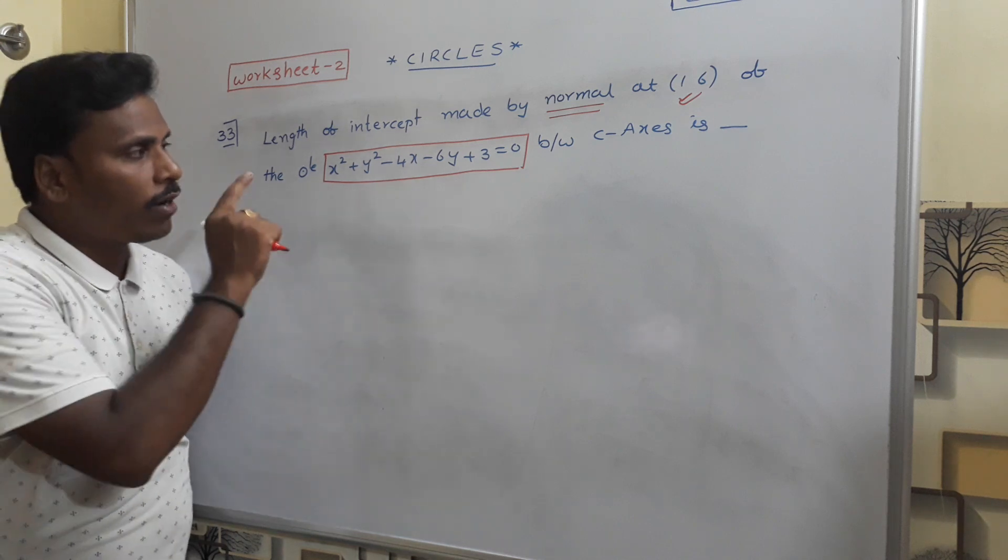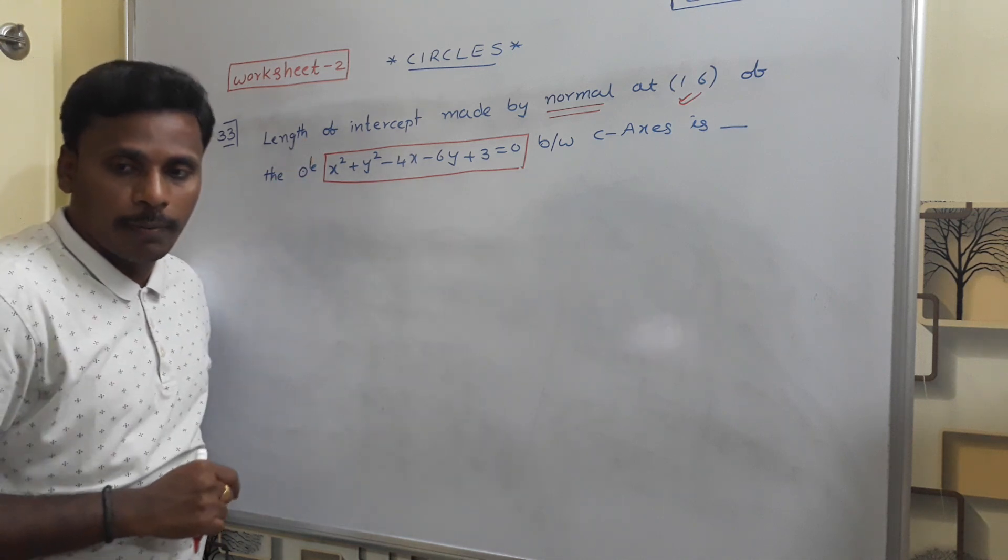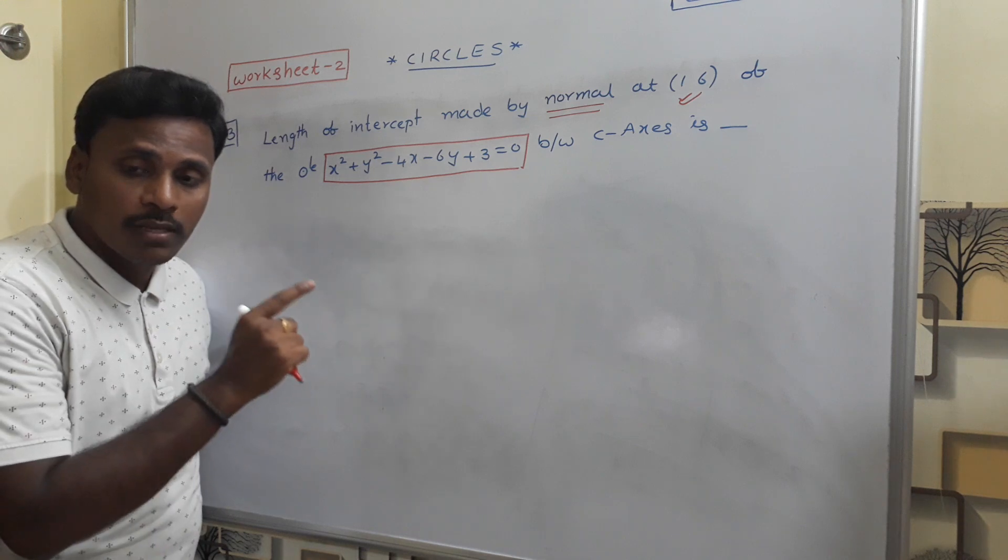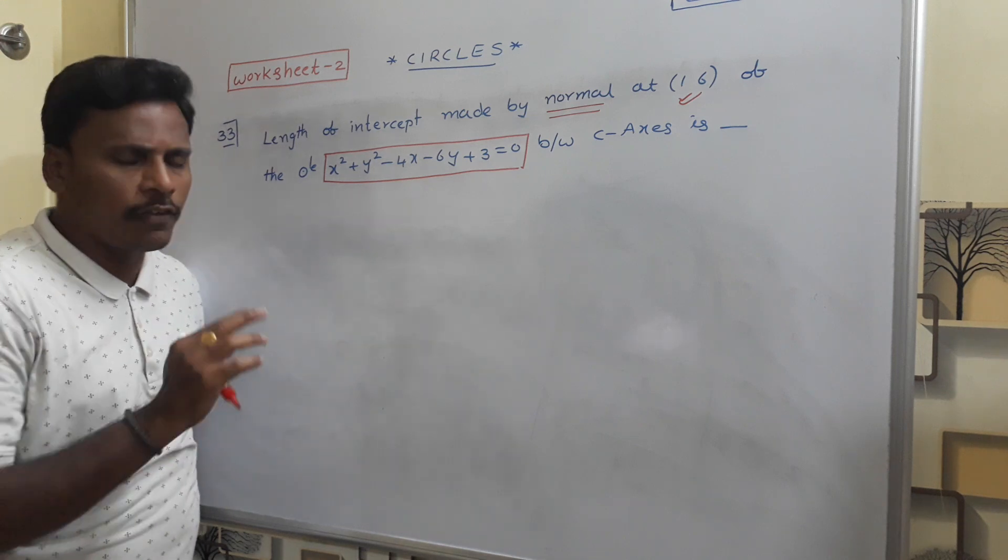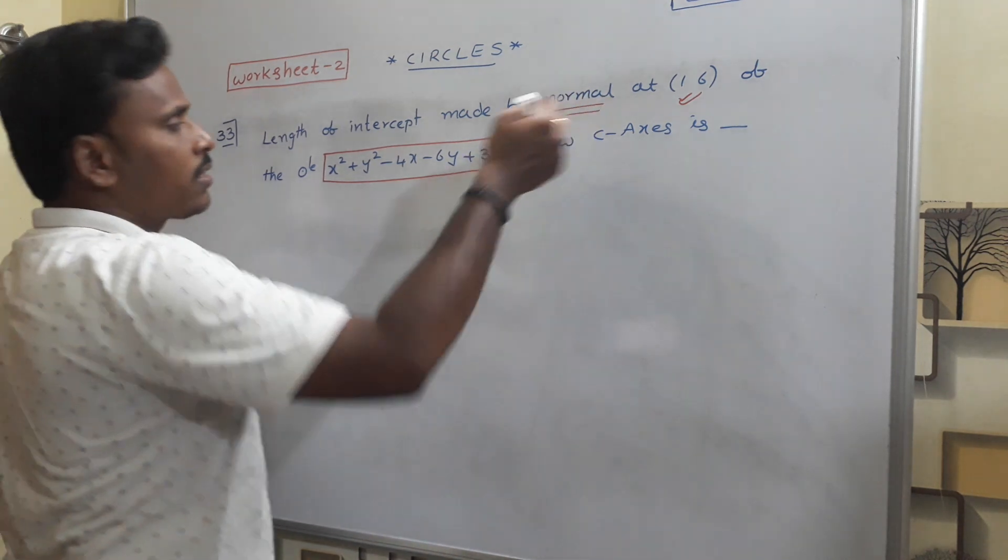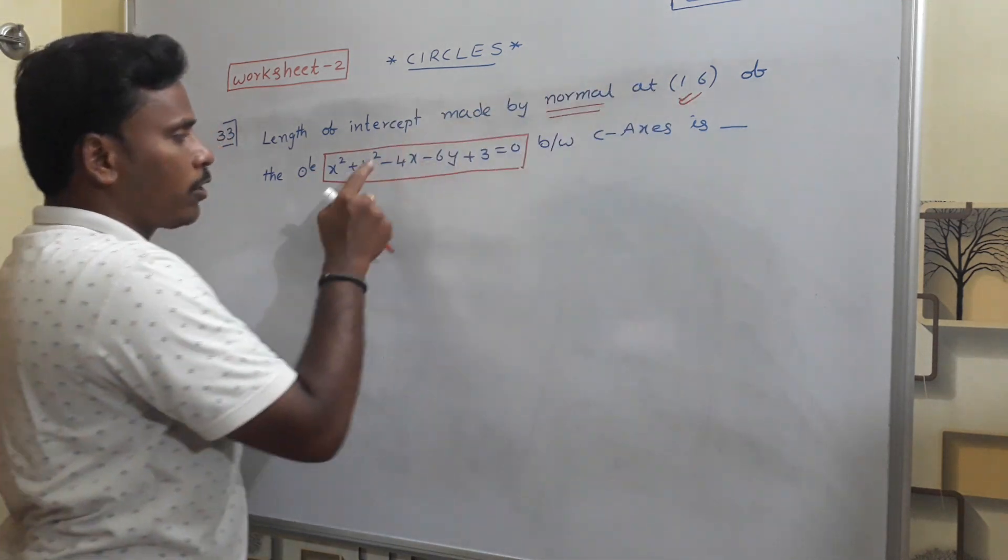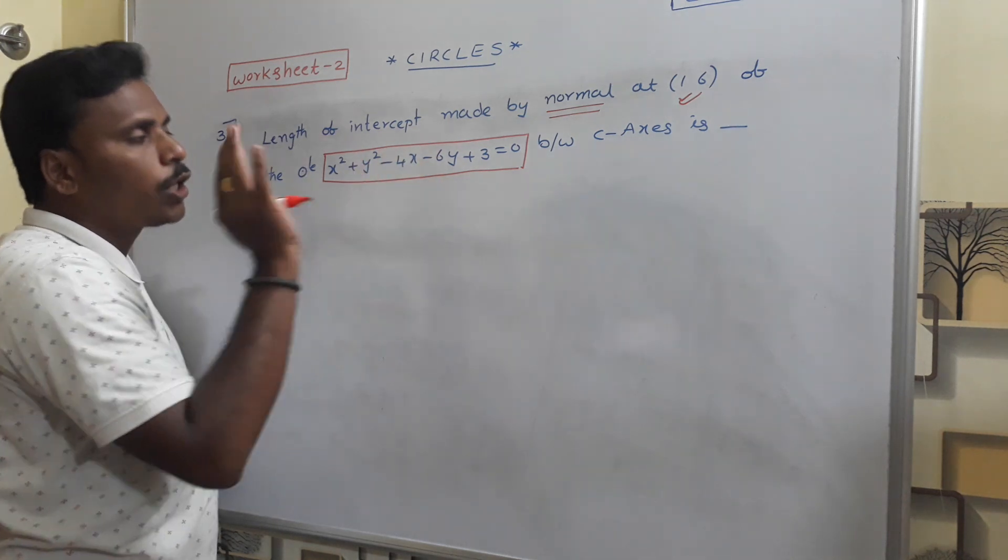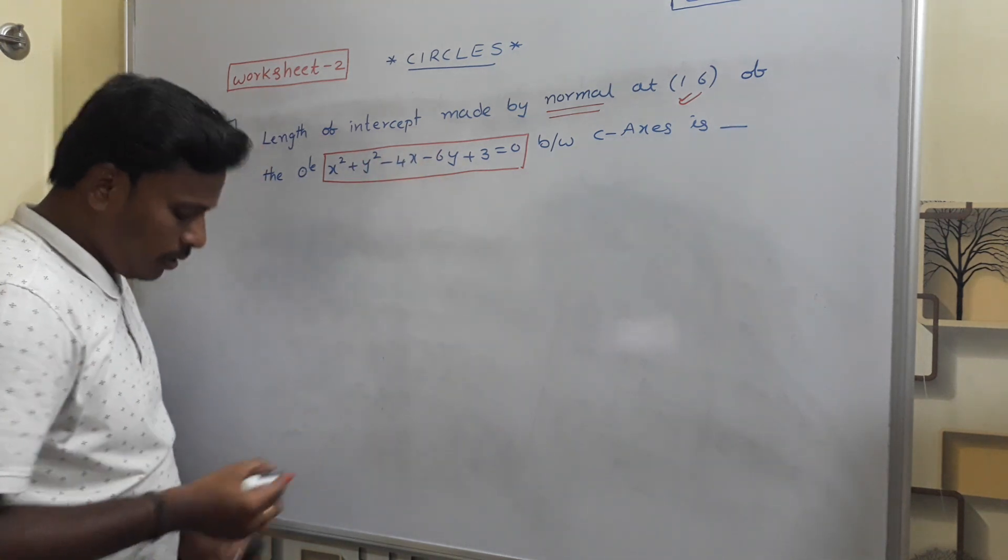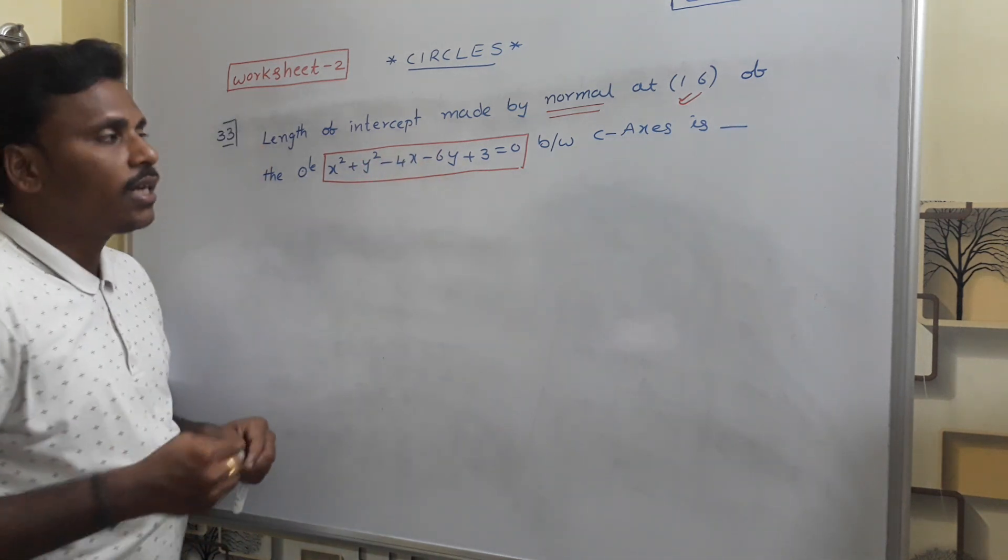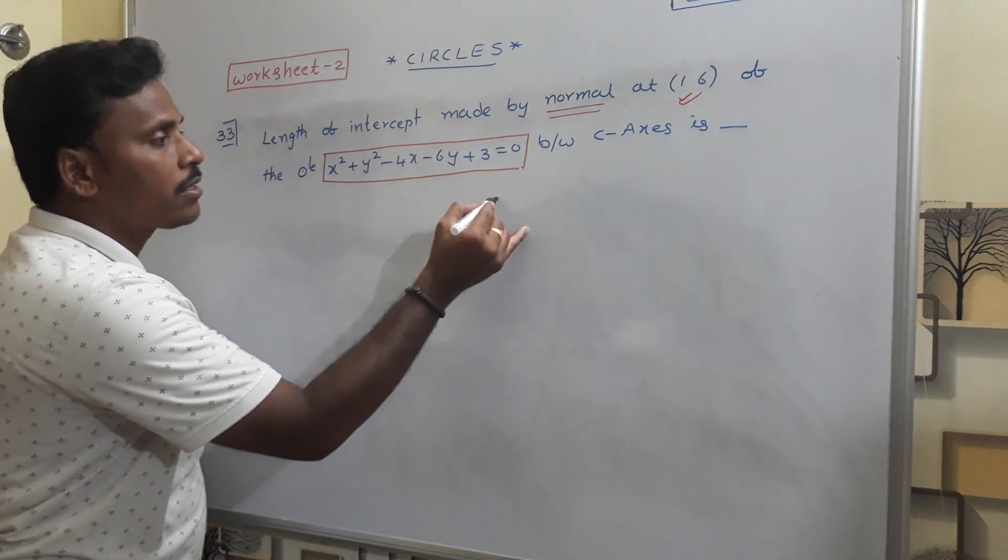That means for this circle at the point (1,6), (1,6) is a point on the circle. If you wish, check it. Substitute: x² plus 1, y² plus 6, simplify it, you will get 0. Now we need to confirm this circle at (1,6) is a point.